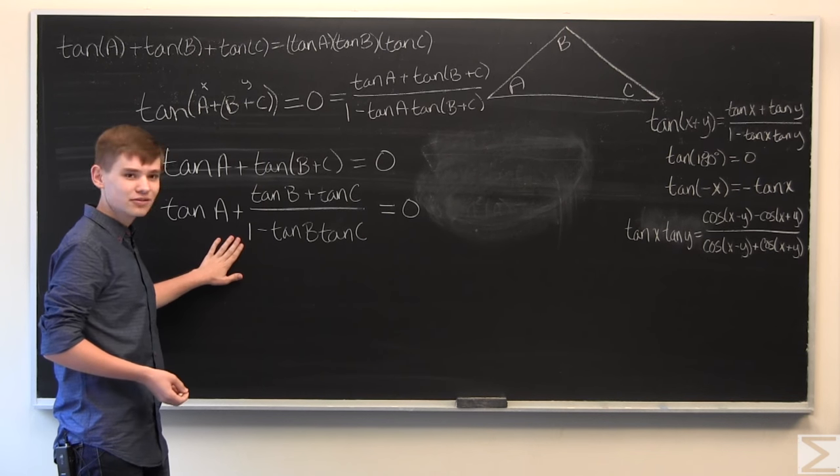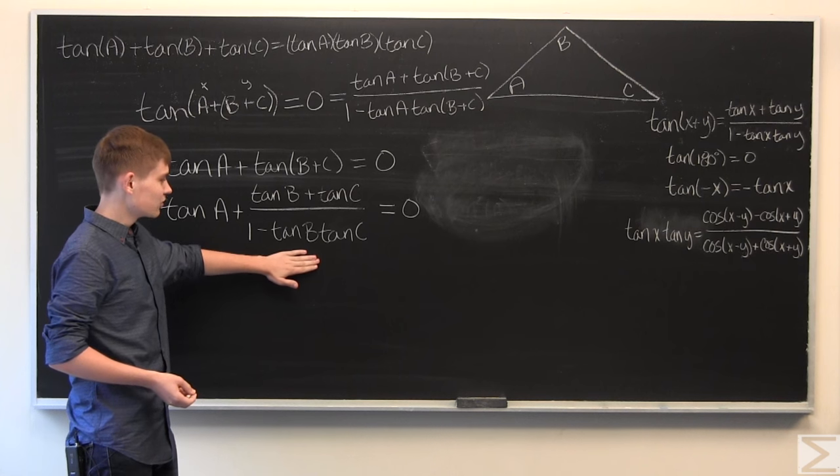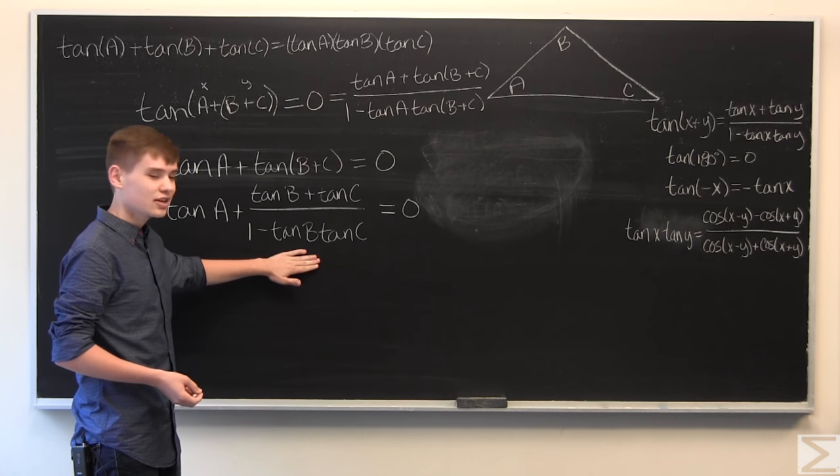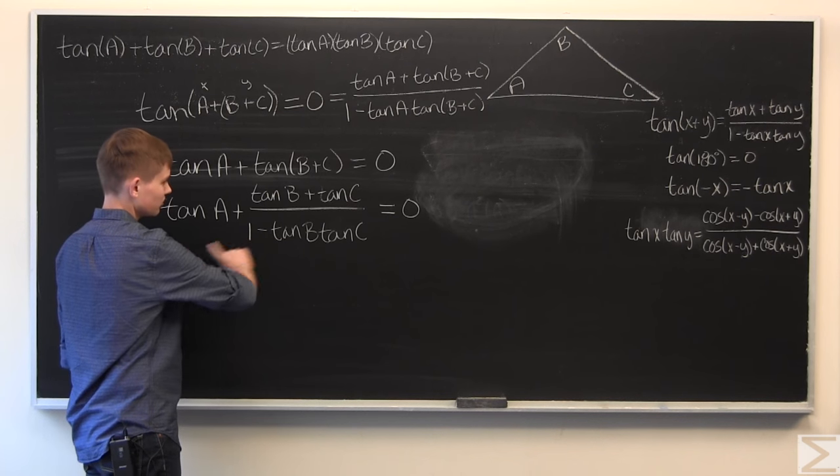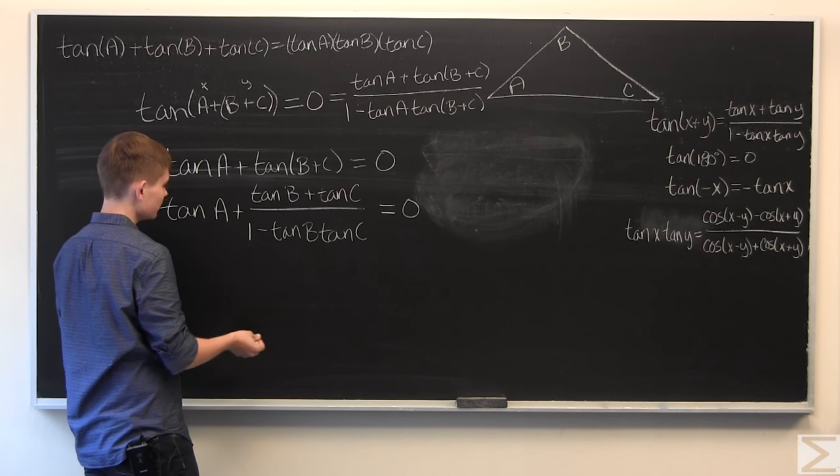So, just take my word that one minus the product of tangent B, tangent C is not equal to zero. And, what we're going to do is multiply both sides by one minus tangent B, tangent C.